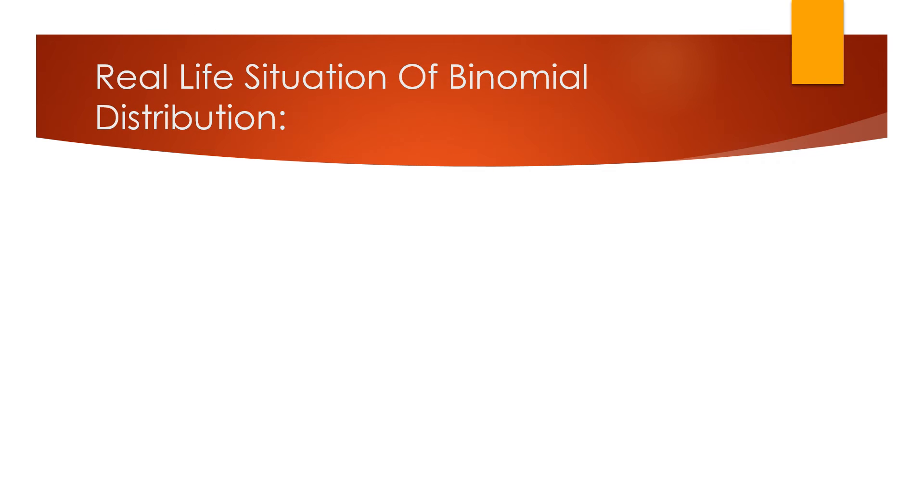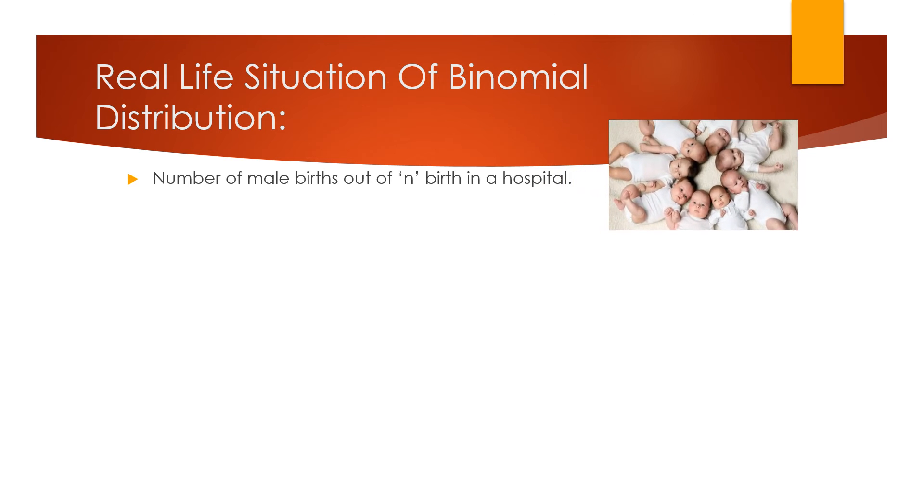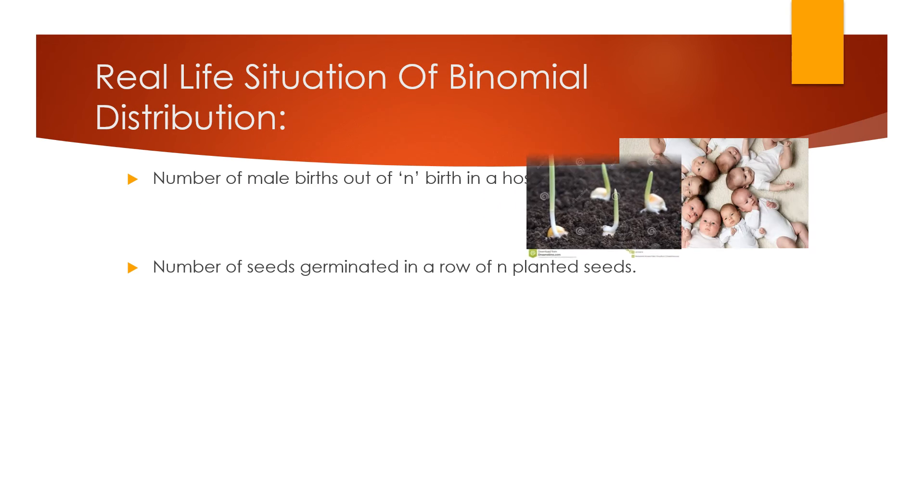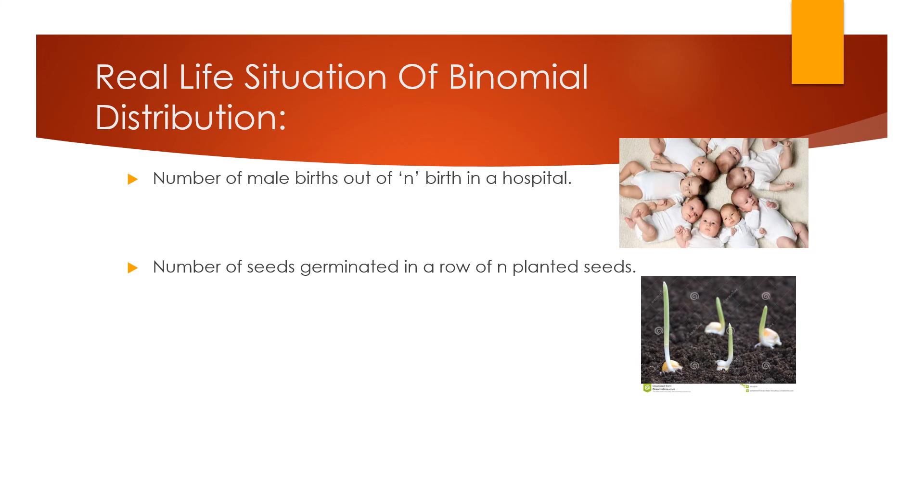Real life situations of binomial distribution: First is the number of male births out of n births in a hospital. Second is number of seeds germinated in a row of n planted seeds. Third is the number of rainy days in a month.